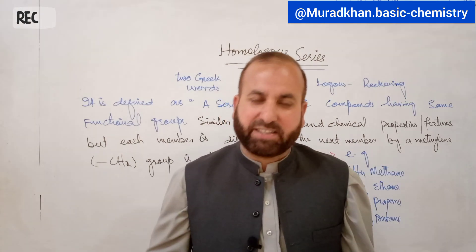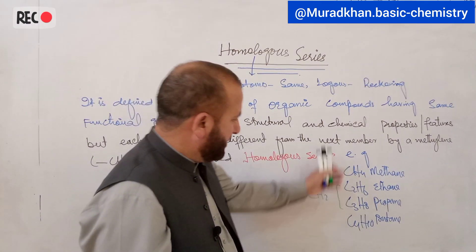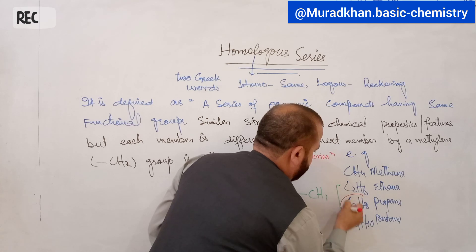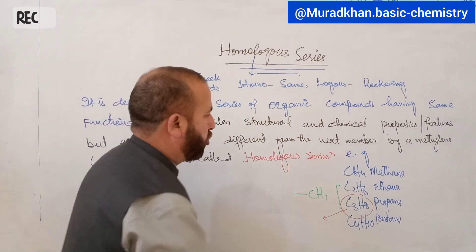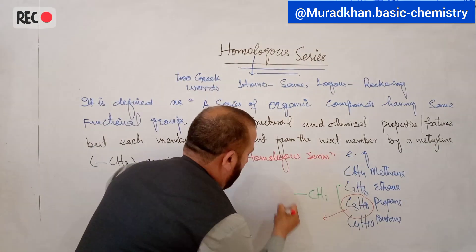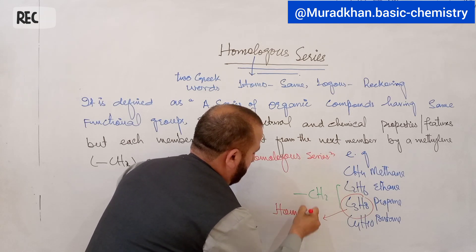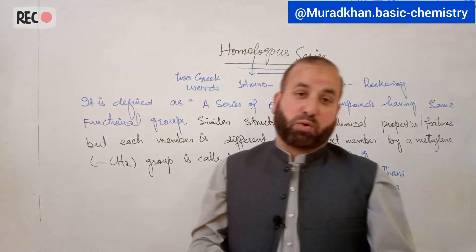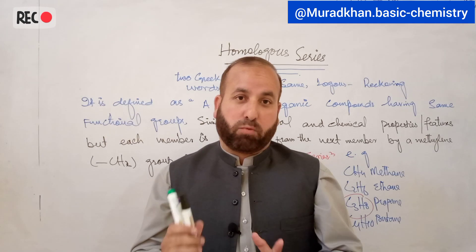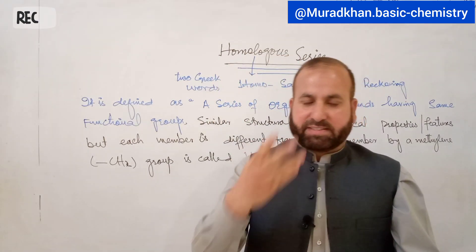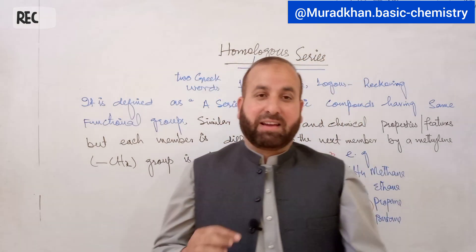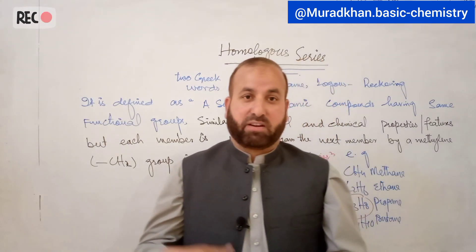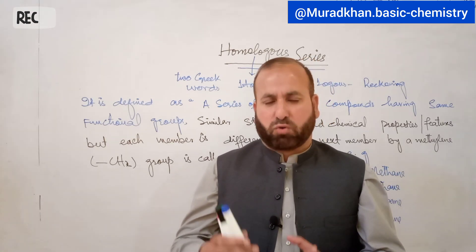Each individual member of a homologous series is known as a homolog. For example, in the alkane homologous series, each single member is a homolog of the alkane homologous series. Similarly, alkene has its own homologous series, and alkyne has its own homologous series. Likewise, alcohol, aldehyde, ketone, carboxylic acid, and halides — all these compounds have their own homologous series.